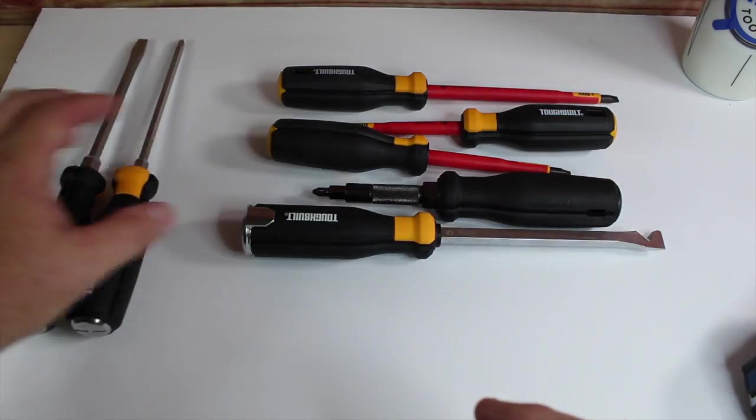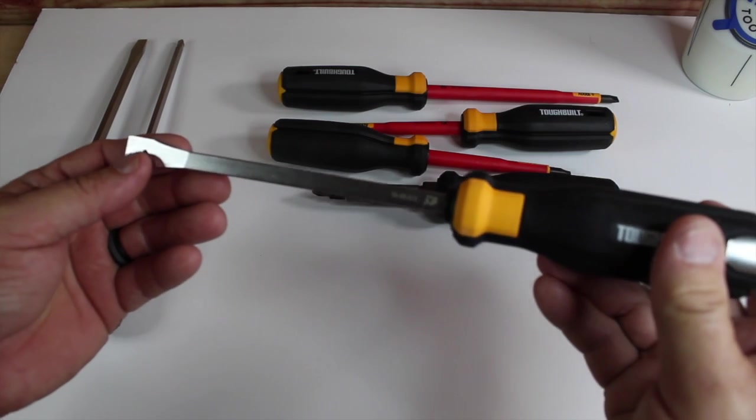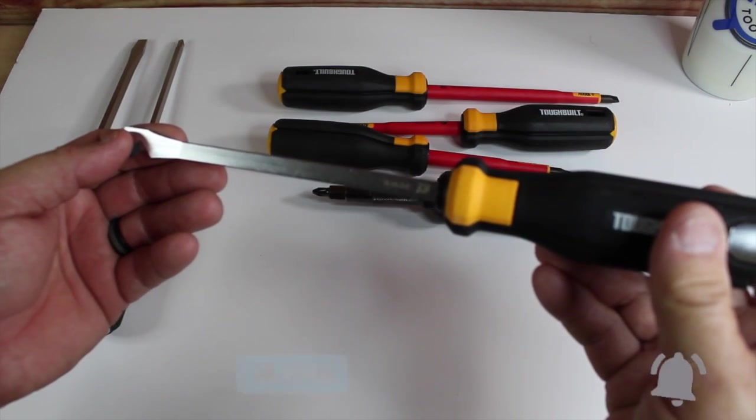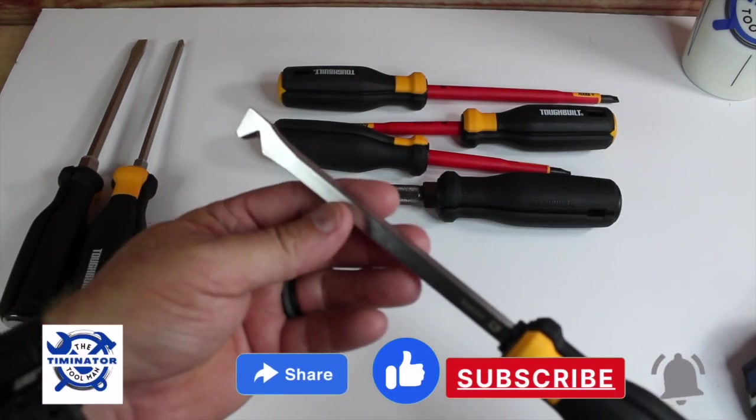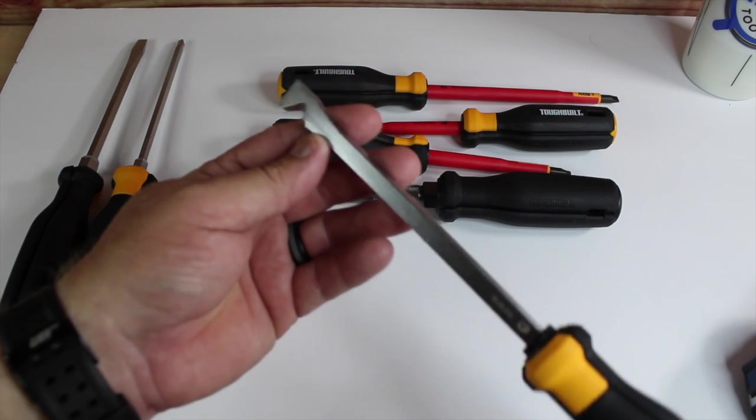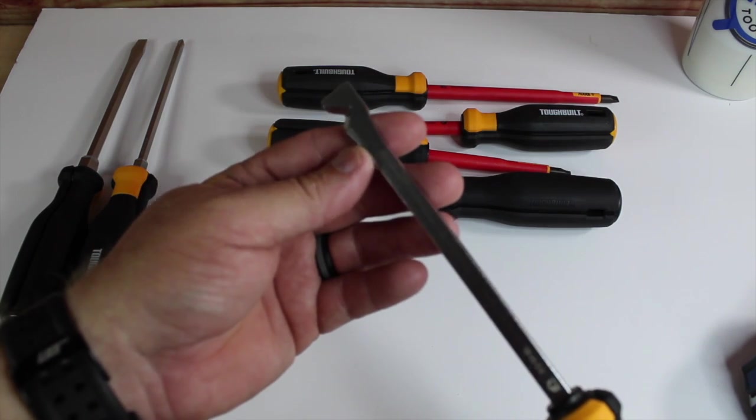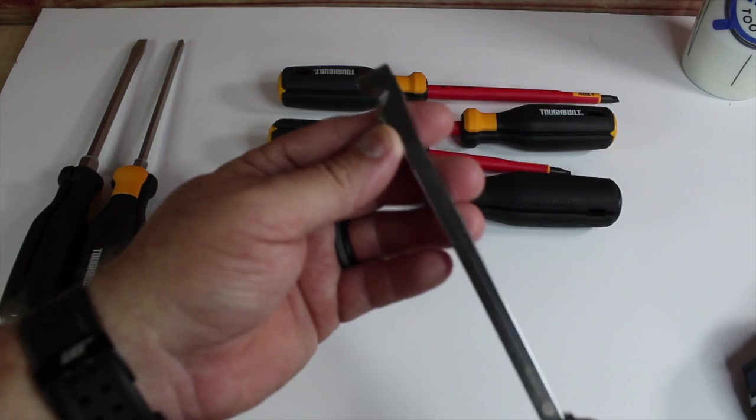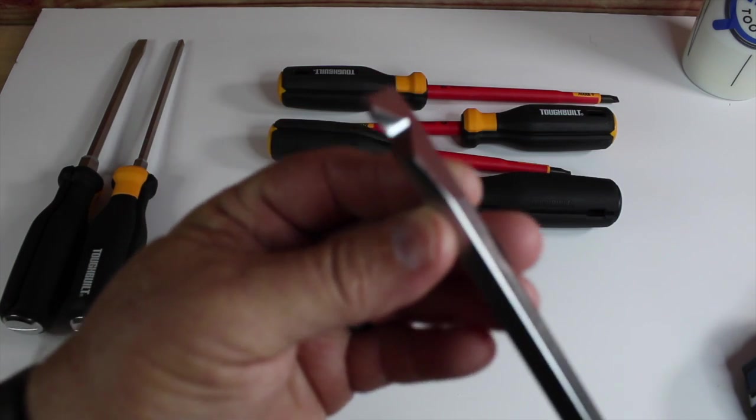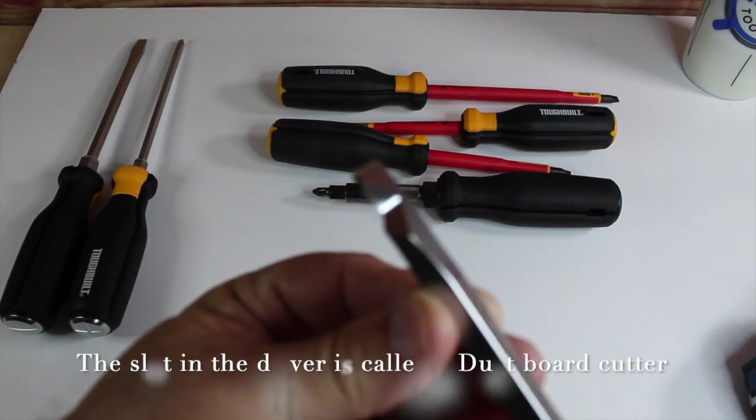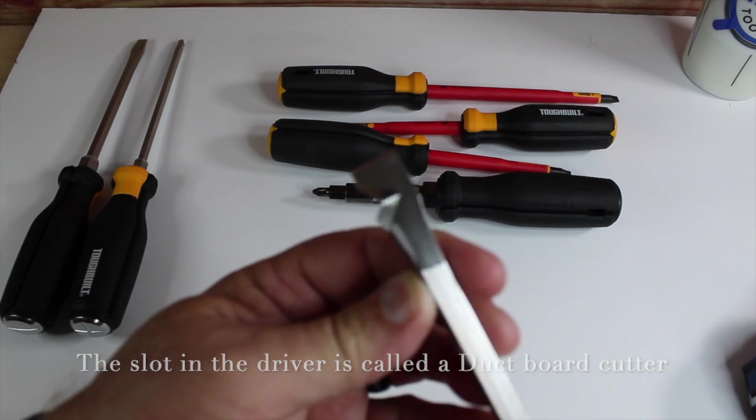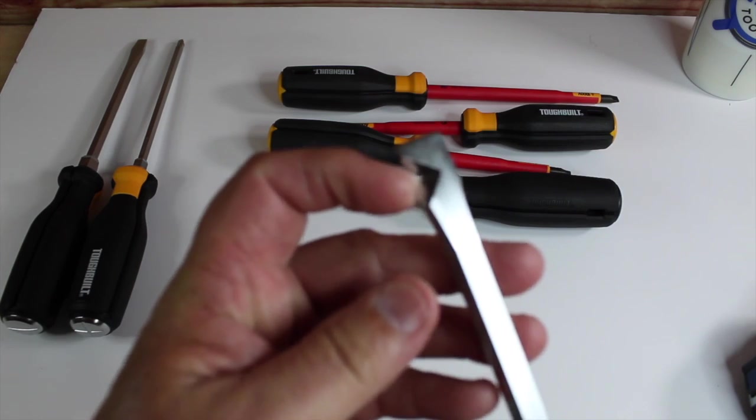So those are new. And then this is the TBH5DX. From what I read, this is actually kind of more geared towards HVAC, but you can pretty much use this for anything. This thing has a groove right here.